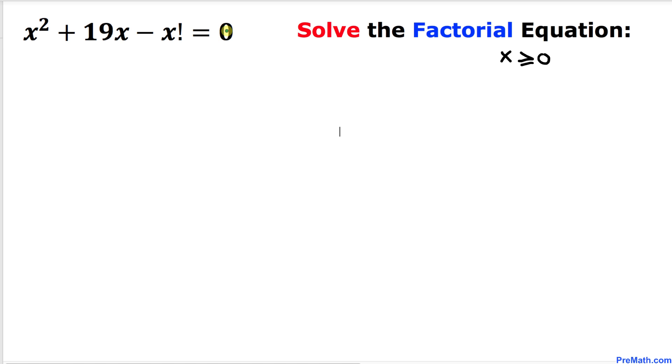Since we are going to deal with factorials in this equation, here's an example. 5 factorial can be written as 5 × 4 × 3 × 2 × 1.